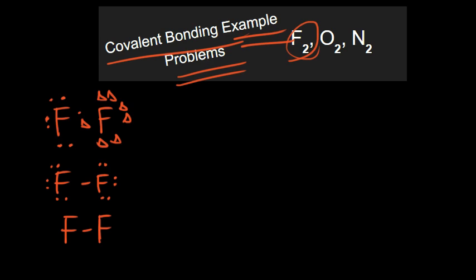That is how you would write out F₂ in three different versions: one version with just Lewis dot structures, one version with a bond substituted in for the two shared electrons, and a third version drawn with just a bond and no other Lewis dot structures around it. That's fluorine gas. Starting out with single bonds is a good idea, but you should also be aware of how many bonds these atoms need to become stable. Fluorine only needs one bond to be stable, so two fluorine atoms next to each other can make each other stable.